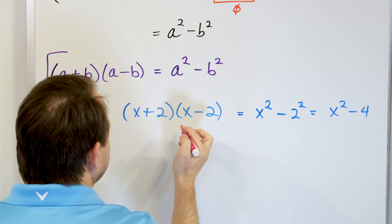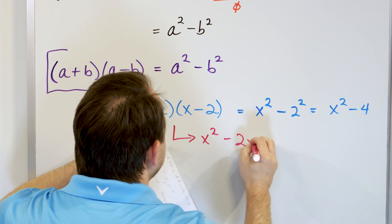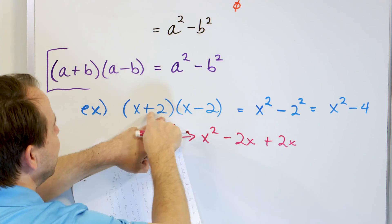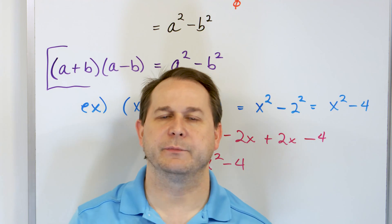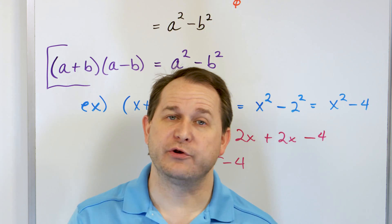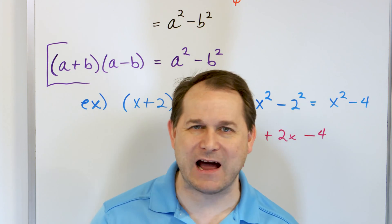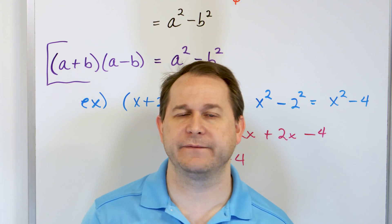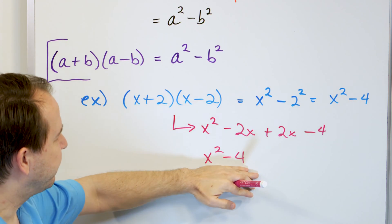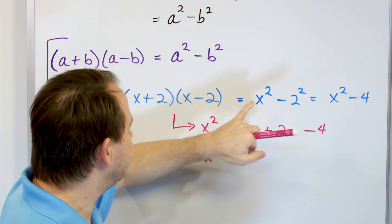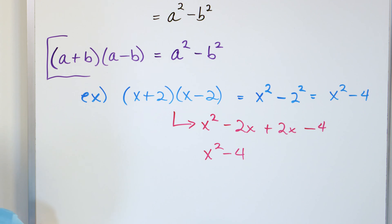Now, if you were going to do it the long way — which is absolutely fine if you forget this — then the way you do it is you take the first terms and make it x squared, the outside terms negative two x, the inside terms positive two x, and the last terms negative four. So you can see right away you're going to get x squared minus four. So the moral of the story is with these special products in algebra, try to remember them, because oftentimes when you're multiplying and simplifying a very large equation, you might come across something of this form. If you forget this stuff, it's absolutely fine just to multiply it out as you always do. But if you happen to recognize it's of this form, you can save a little time just by writing the answer down — first term squared minus second term squared.